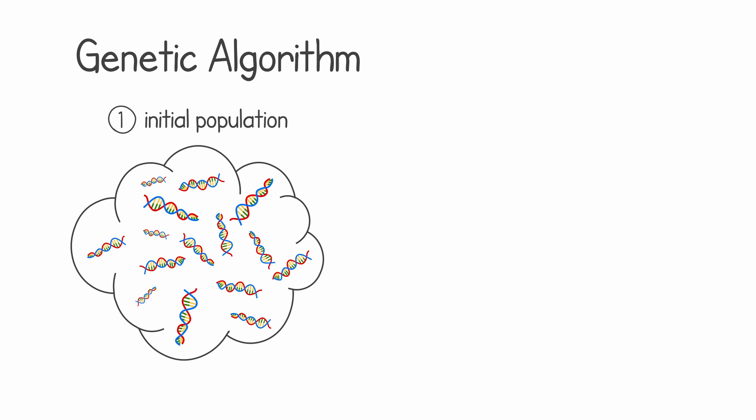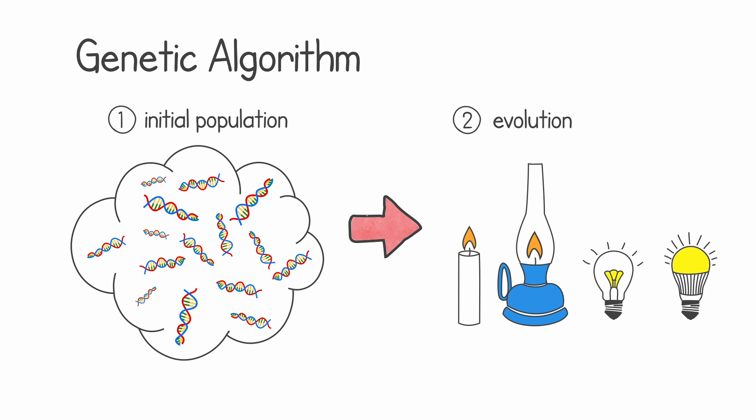A genetic algorithm works in two steps. First, we create an initial population containing an initial number of possible solutions. Then we evolve this initial population through a number of generations, and each time we will get closer to the final solution.